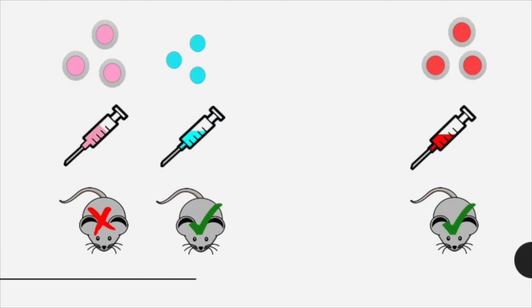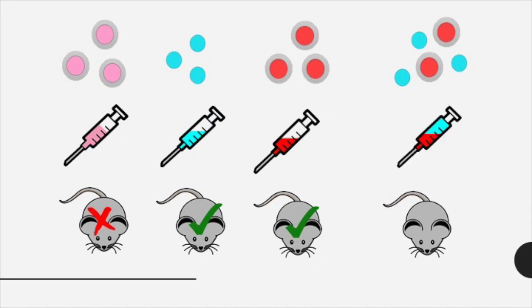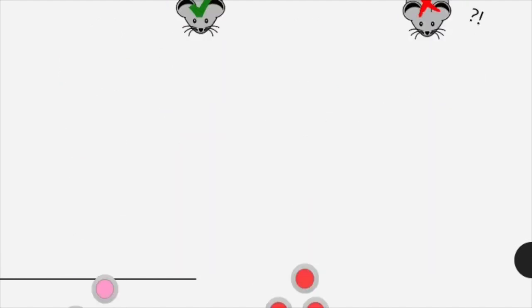In the final step of his experiment Griffith took the heat killed virulent bacteria and added it to live non-virulent strain. Both of these were harmless to the mice when tested individually. However when combined and injected somehow the mouse died. He concluded that the heat killed bacteria somehow transformed the live non-virulent strain into lethal virulent encapsulated bacteria.